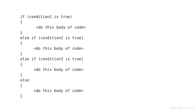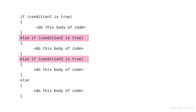The last variation is to include the else-if. The else-if is a hybrid look between the else and the if. We still have our condition in parentheses, we still have the keyword if, and we still have the keyword else. So we kind of have the best of both worlds.